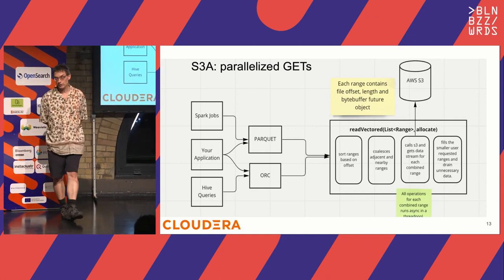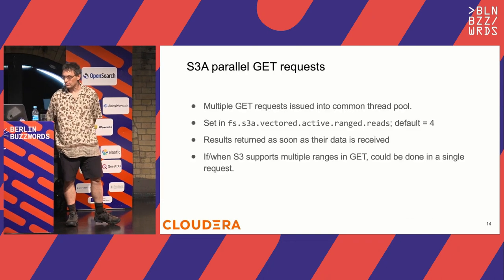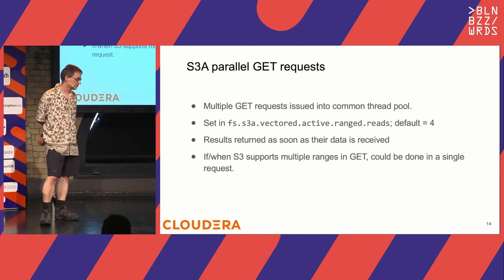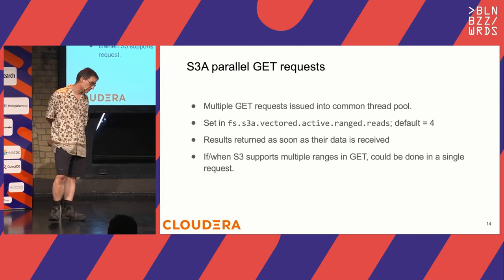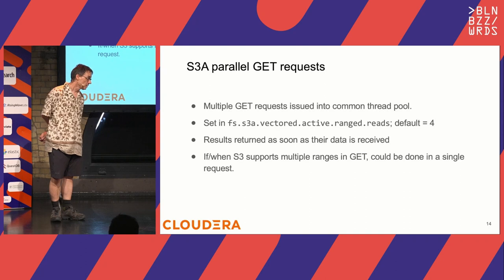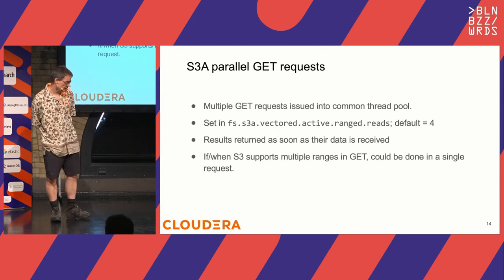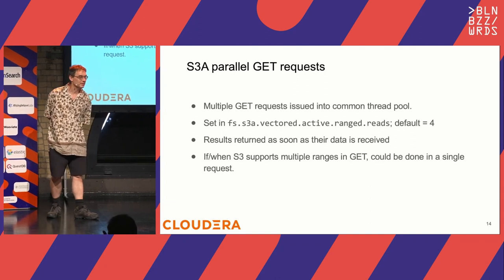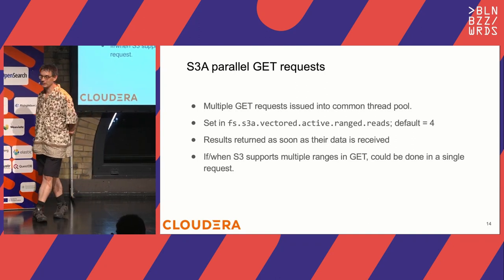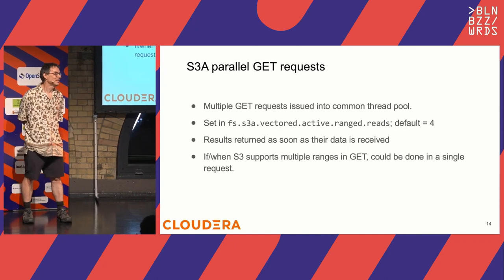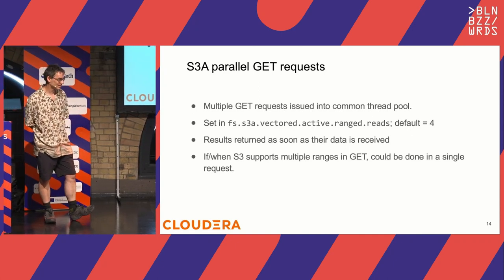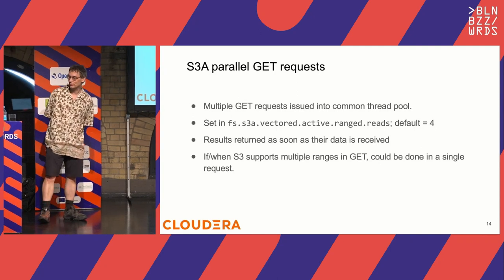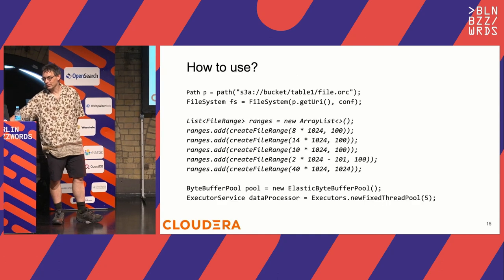The other thing in the S3A implementation is we do these reads in parallel using a thread pool shared across the entire file system. We limit each file to a smaller number of threads — default is four. We set it reasonably low to defend against benchmark teams that would crank up massive parallelism, then find in production that S3 starts to throttle when generating so much I/O. So we dream of multiple GET requests.